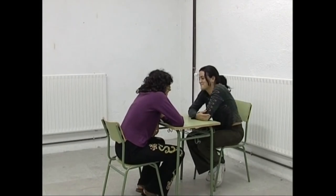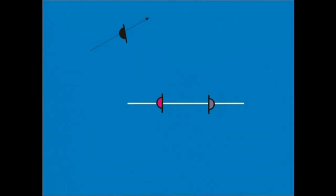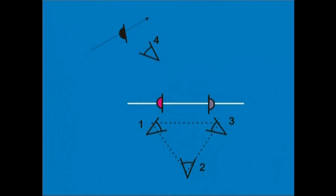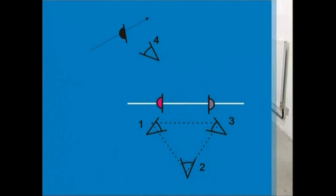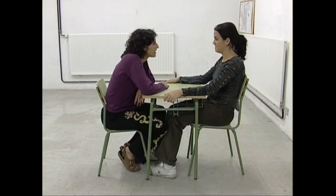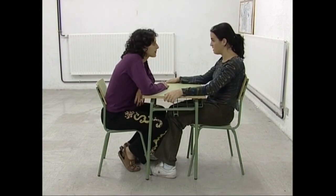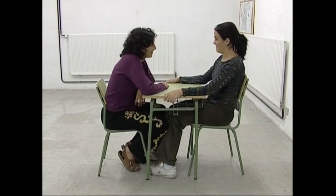Bi pertsona itzegiten ari dira mahai baten inguruan eserita. Beste pertsona bat iragaten da albotik. Ekintzaren ardatza zehaztuko dugu eta triangelua marraztuko dugu. Erabiliko ditugun kameraren kokaguneak hauek dira. Ezkena honela garatuko litzateke. Bi pertsona, mahai baten inguruan eserita, itzegiten. Egoeraren planoa bi kokagunetik.